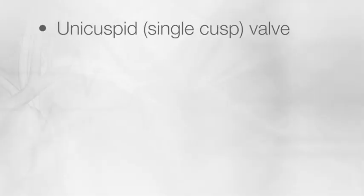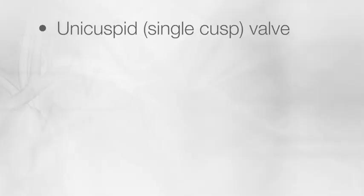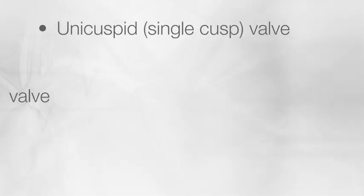By contrast, individuals with a congenitally abnormal valve — meaning a unicuspid or single cusp valve, or a bicuspid, a two cusp valve — these patients frequently will suffer significant narrowing of the valve earlier in life. For instance, those with a bicuspid valve may suffer from significant narrowing in their 50s or 60s.